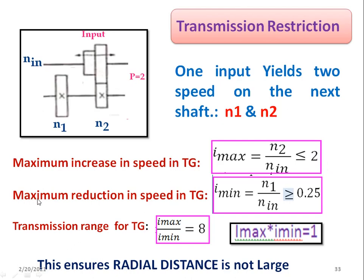The maximum reduction in speed in the transmission gearbox is indicated by I_min, which equals n1 divided by n_input, and this must be greater than or equal to 0.25 (i.e., one-fourth). So if n_input is 100 RPM, you can reduce the speed only down to 25 RPM — not beyond that. The minimum achievable speed is one-fourth of the input speed.